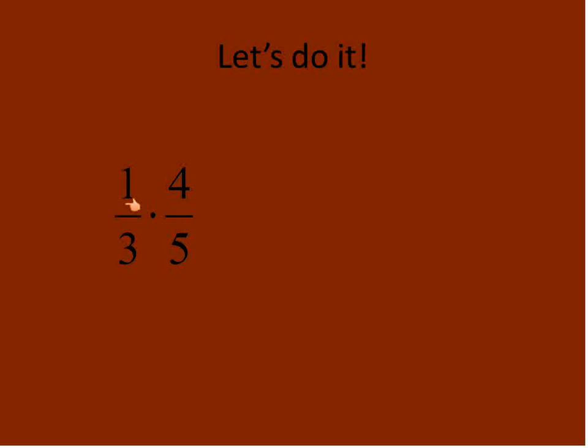1 over 3 times 4 over 5. So what I'm going to do is 1 times 4, top times the top, 3 times 5, bottom times the bottom. In other words, the numerators are multiplied, and the denominators are multiplied, and we end up with 4 over 15. 4 over 15 is already in lowest terms. We can't reduce that down any further, so that's it. We're done.